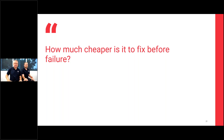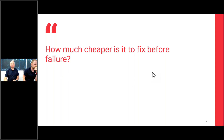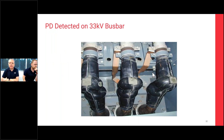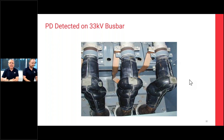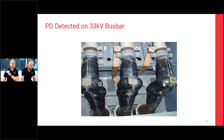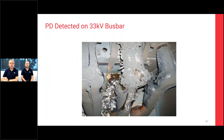The next question: how much cheaper is it to fix before failure? Looking at a 33 kV busbar connection example — with verdigris, white powders, and tracking marks visible — taking an outage to replace the joint shrouds is expensive. A busbar outage on a 33 kV zone substation requires significant work, and if production is on the end of it, the planned outage cost is still substantial. But the alternative is to let it fail.